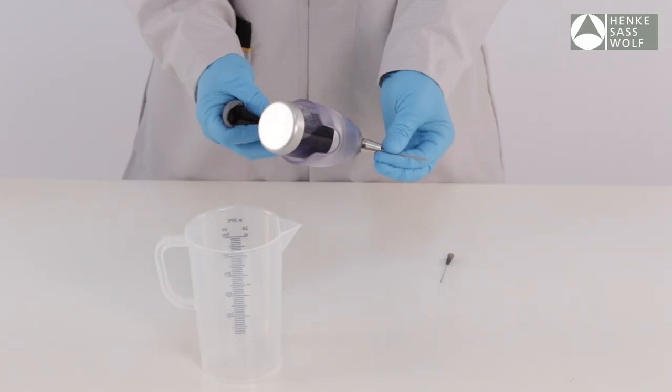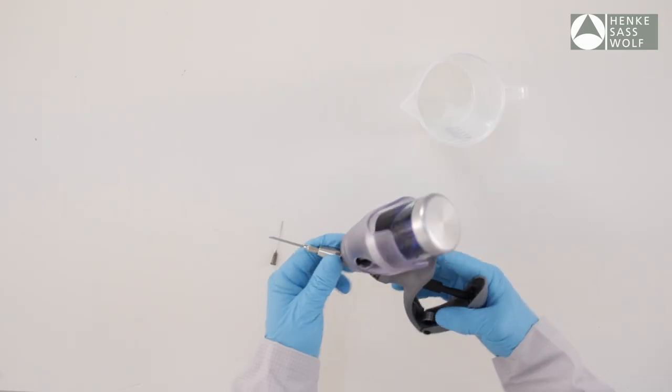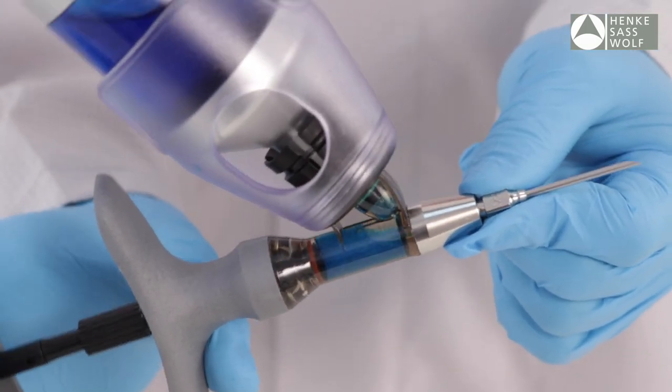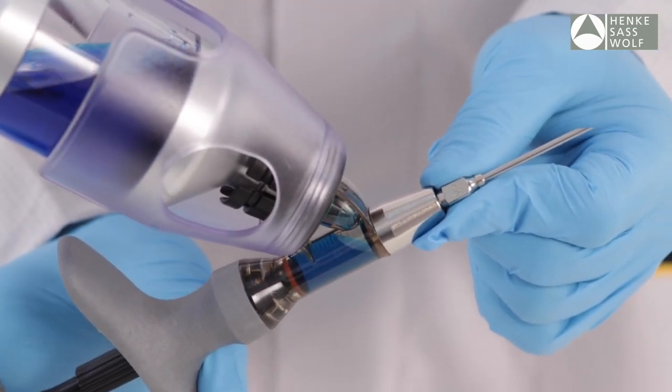Insert needle onto luer lock fitting and secure the needle clockwise. In order to prime your syringe, hold the Ecomatic at a slight incline.